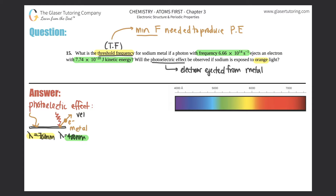Electrons will have a certain velocity, and the higher the frequency, the more chance you will have the photoelectric effect because you will go over the threshold frequency. The much higher the frequency, the higher the velocity and the faster those electrons will be ejected. Wavelength and frequency have an inverse relationship — the lower the wavelength, the higher the frequency. That's basically the photoelectric effect in a nutshell.